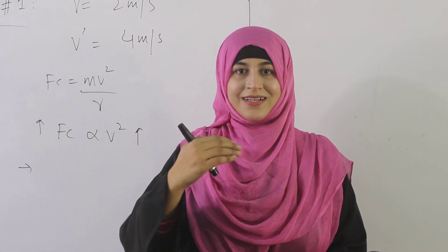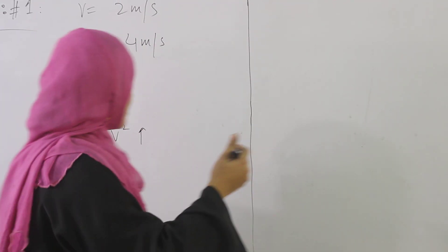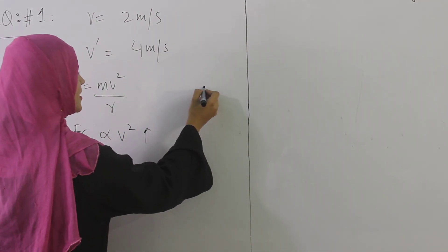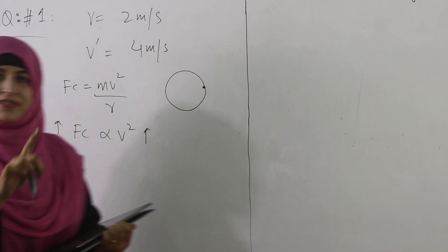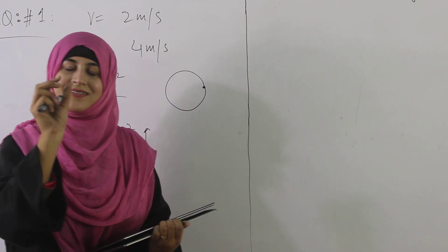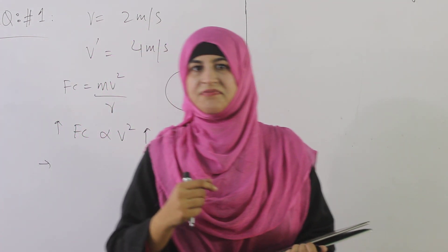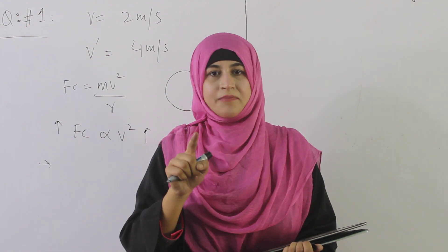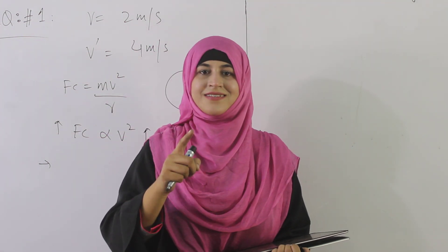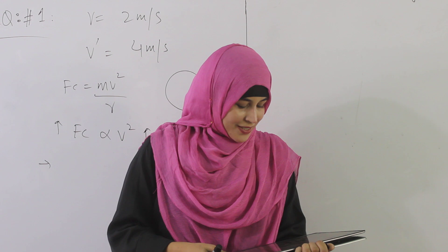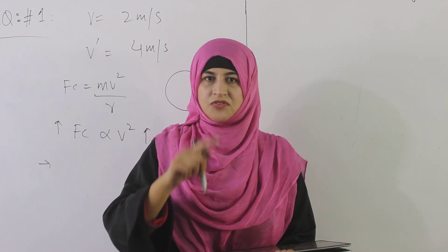In circular motion, a body starts from a point and returns to the same point. Since the initial and final positions are the same, the displacement is zero, while the distance is non-zero. As you studied in chapter five, if the initial and final points are the same, displacement is zero. Option C is random motion and option D is oscillation — both are incorrect. So option B, circular motion, is the correct answer.